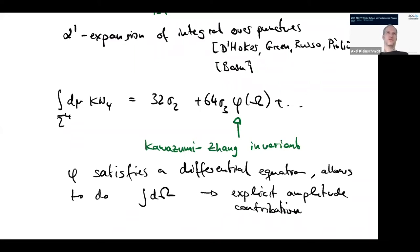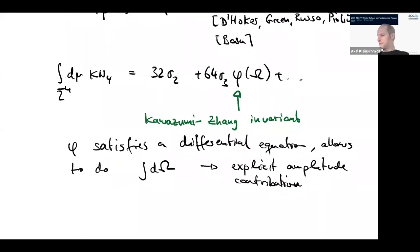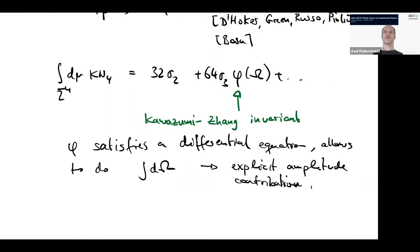As soon as you go to non-trivial orders in alpha prime and higher loop orders, these computations become quite tricky, but more and more methods are being developed. What seemed impossible a few years ago is becoming more possible. The next few terms in this expansion as an integrand — functions of omega — are now called string invariants. These are new invariants for Riemann surfaces that had not been considered in mathematics, another very nice interplay between string theory and mathematics.